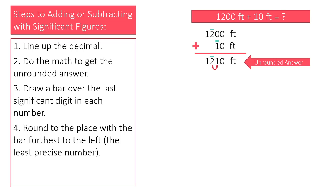Next to the 2 is a 1, so the rules of rounding say that the 2 stays the same. The rounded answer, with correct significant figures, is 1,200 feet.